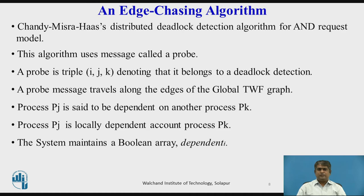Chandy-Mishra's distributed deadlock detection algorithm for the AND request model illustrates deadlock detection using edge chasing. This algorithm uses a message called a probe. A probe is a triple IJK denoting that it belongs to a deadlock detection initiated for process PI, and it is being sent by the home site of process PJ to the home site of process PK. A probe travels along the edges of the global transaction wait-for graph, and a deadlock is detected when a probe message returns to its initiating process.